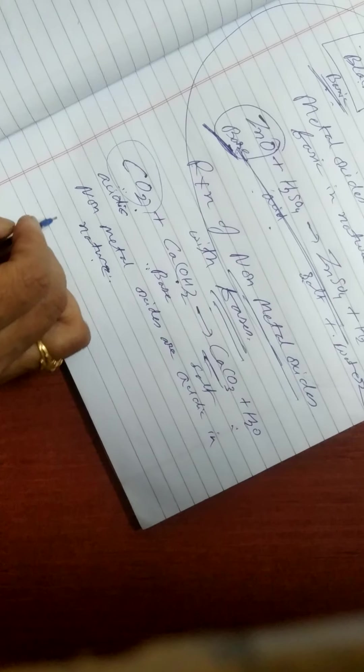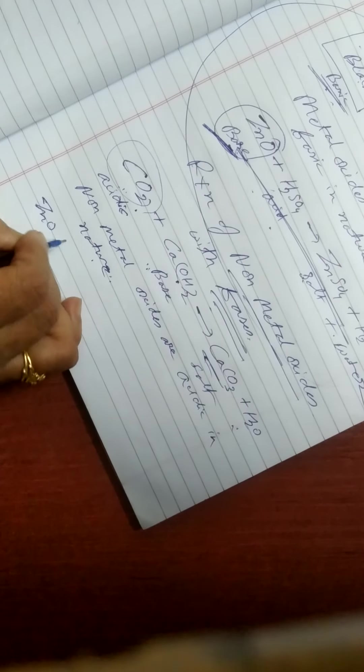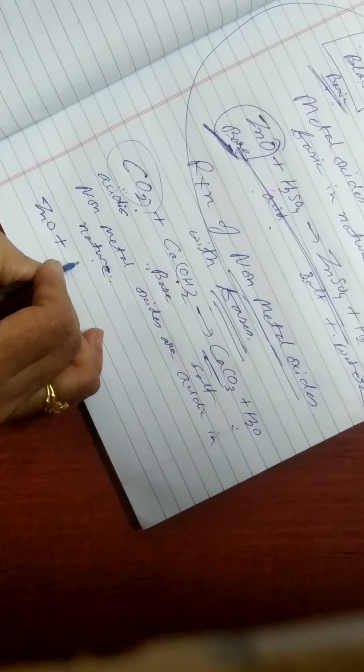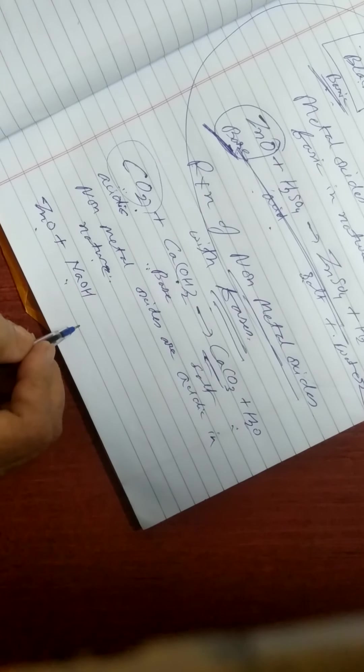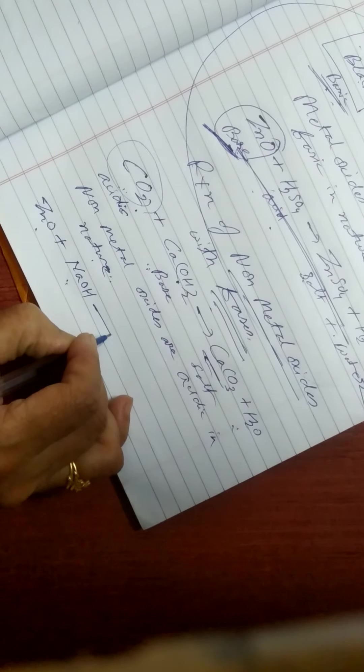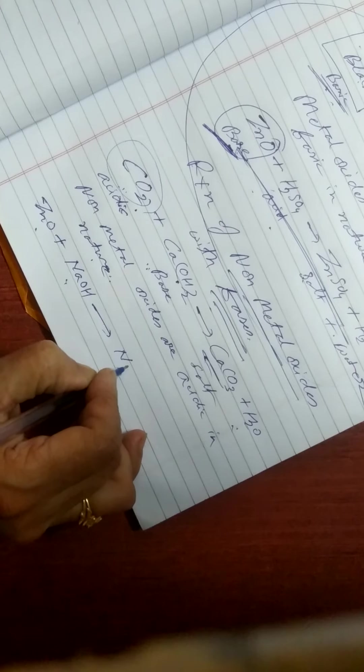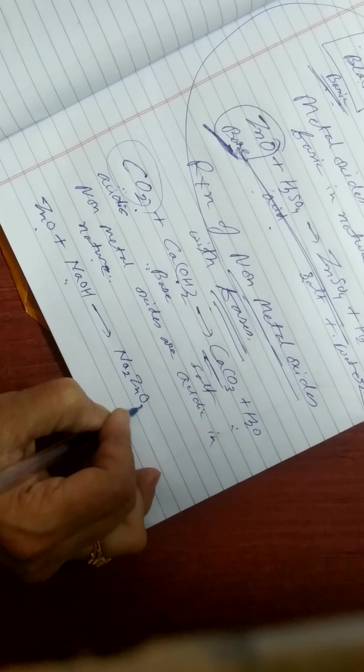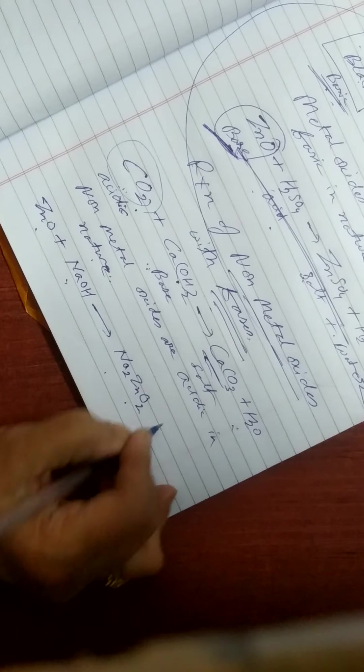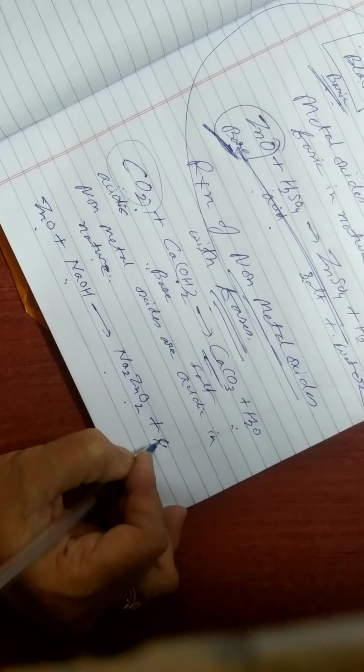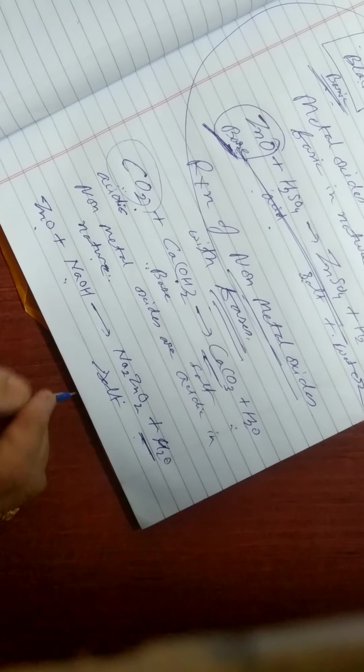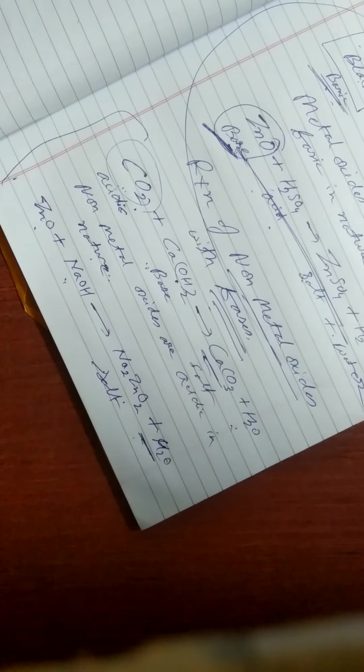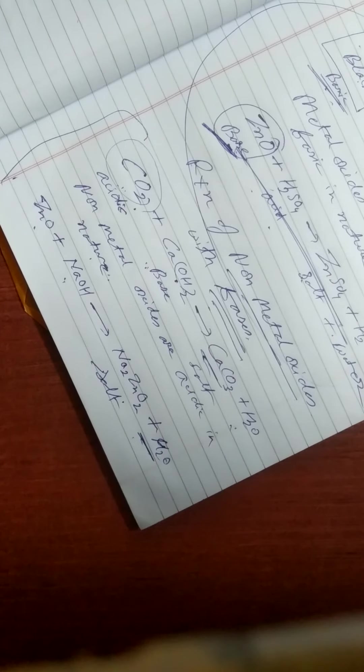One more example: we can take ZnO plus NaOH. NaOH is a base. This is acidic oxide, zinc oxide here. They form Na2ZnO2 sodium zincate plus H2O. So salt plus water. All these are neutralization reactions.